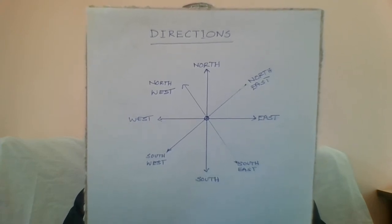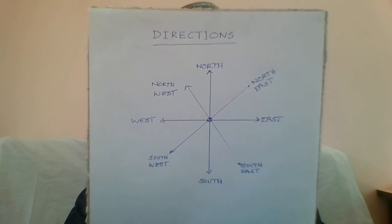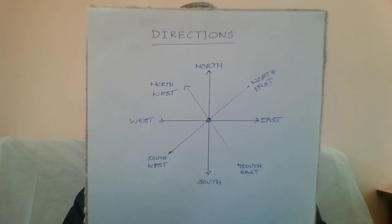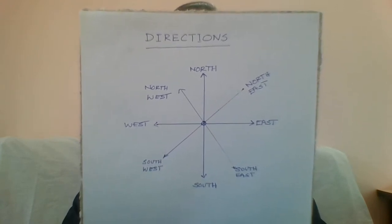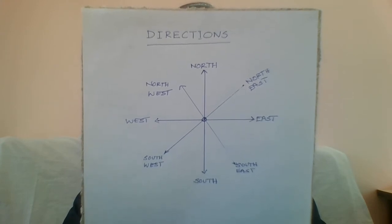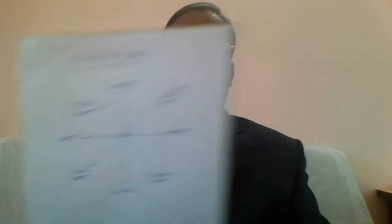For example, the angle between North East and East is 45 degrees. If we know this theory, then we can solve any type of problem in this direction sense. Now let us look at one problem and try and solve the problem in this video.